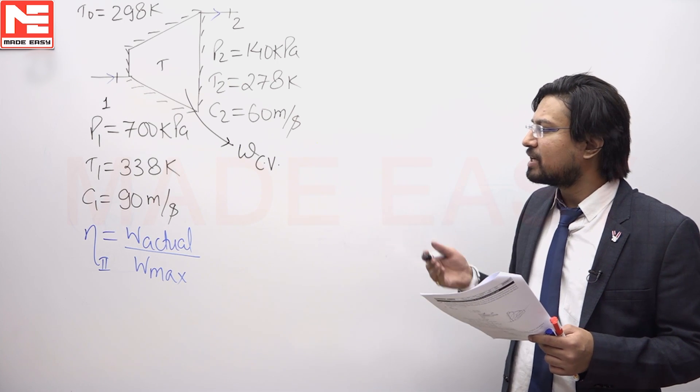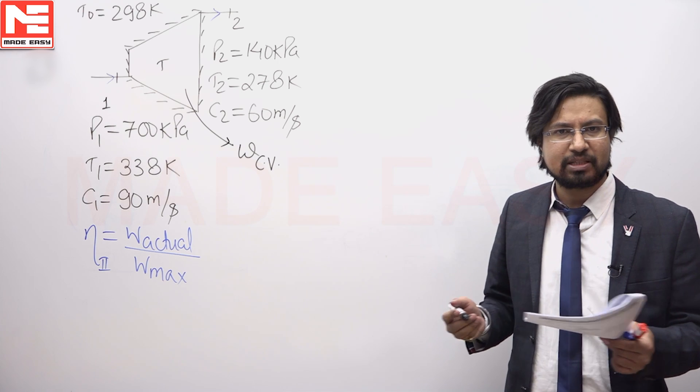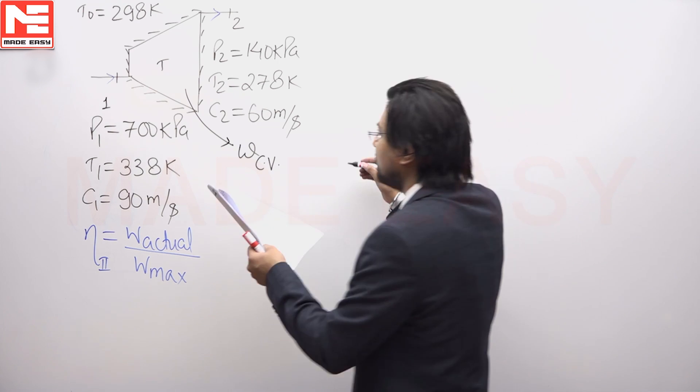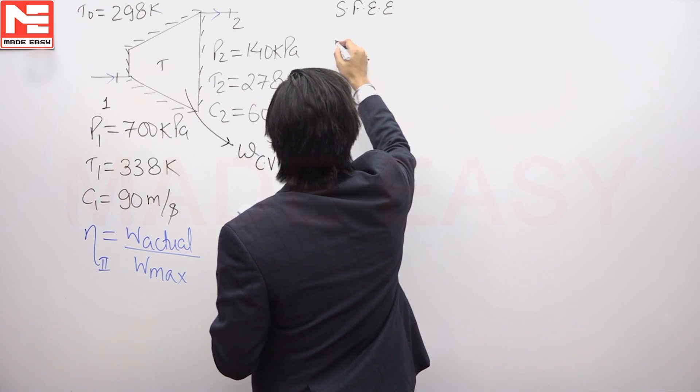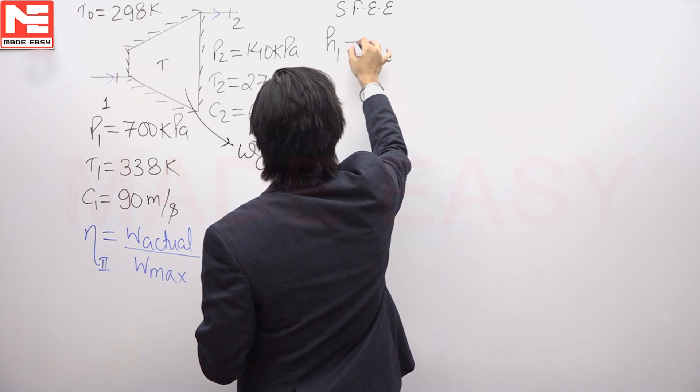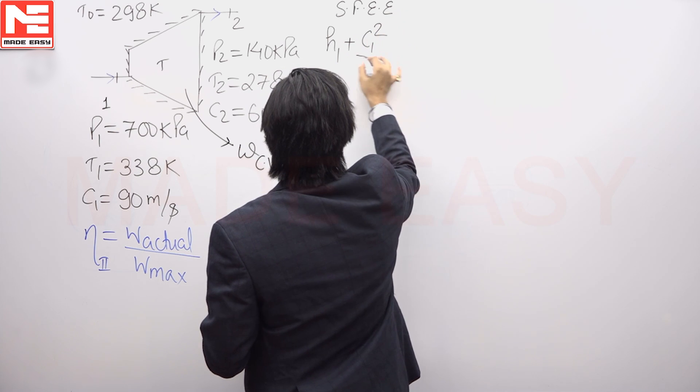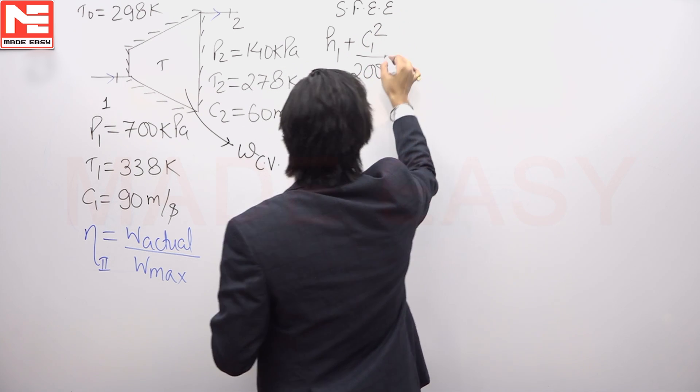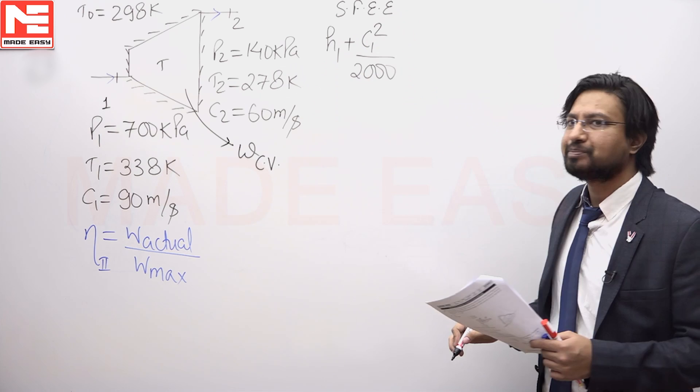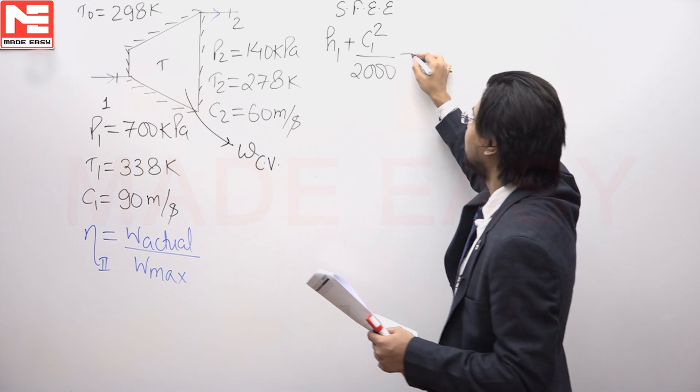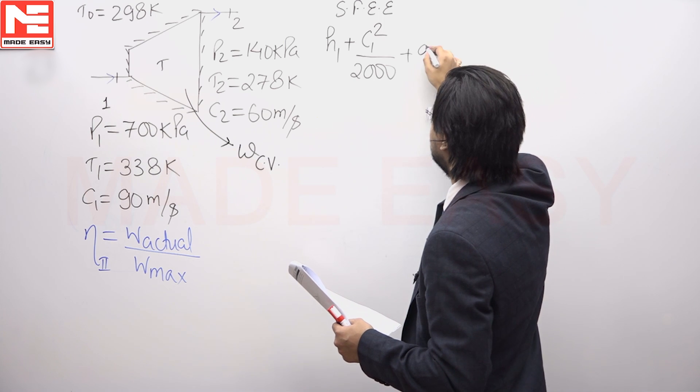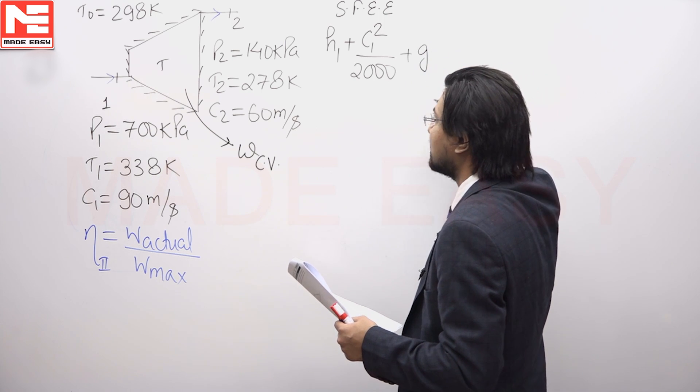Let me try finding out the actual work by using the conservation of energy. If we apply steady flow energy equation here, it will give us H1 plus C1 square upon 2000 because I want to convert this into kilojoule, plus GZ1 potential energy changes has to be neglected.